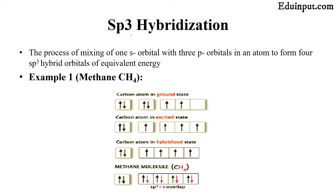These four orbitals have slightly different energies, but after the process of hybridization they will have the same amount of energy. This is the reason these four atomic orbitals convert into hybrid orbitals and then combine with the orbitals of other atoms. Let us take examples of sp3 hybridization. We have methane: we can see the ground state electronic configuration of carbon, then the excited state, where there are four half-filled orbitals. The carbon atom in the hybridized state — these four orbitals combine to form hybrid orbitals.